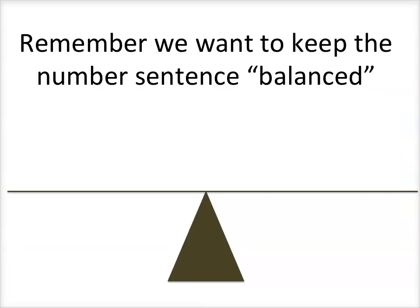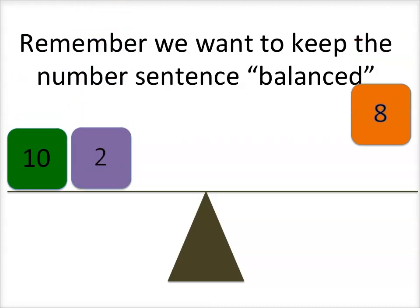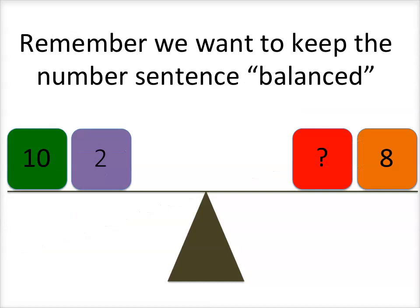Let's look at another example. Remember, we want to keep our number sentence balanced. So let's add on our numbers. This time I have a ten and a two on one side and an eight on the other. This equation is also not balanced. So what do we need to do to balance our number sentence again?